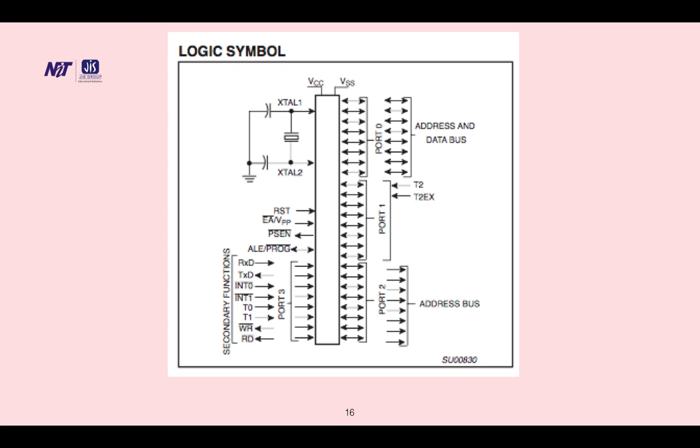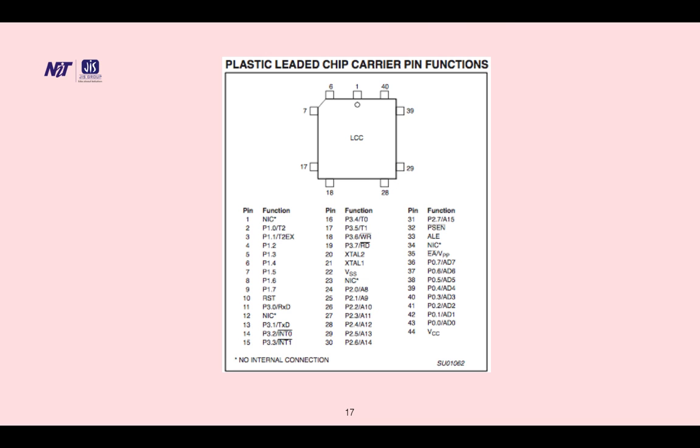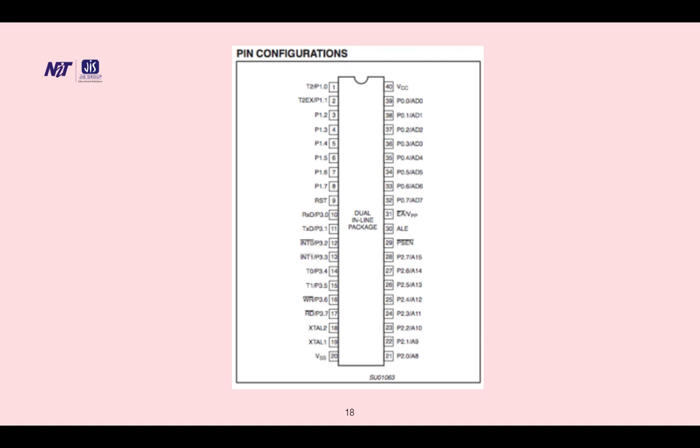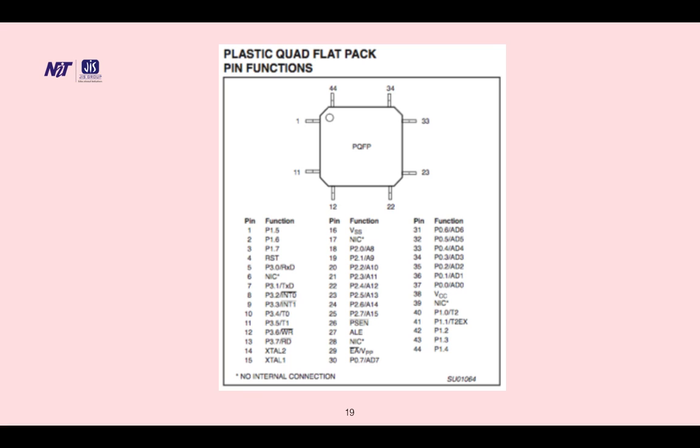This is the logic symbol; the crystal oscillator is shown over there. Address and data buses are shown. This is plastic leaded chip carrier pin function, 1 to 44 pins are shown. Then plastic quad flat pack pin functions, 1 to 44. These are the pin configurations: dual inline package and plastic quad flat pack pin functions.